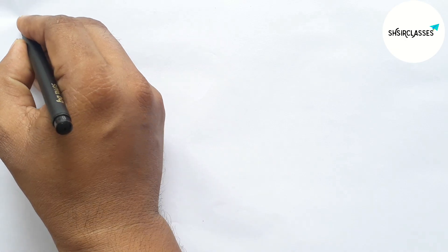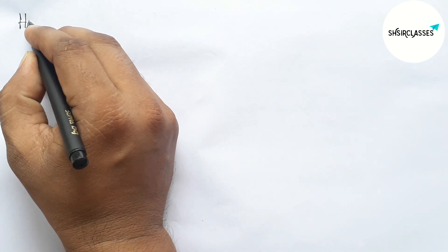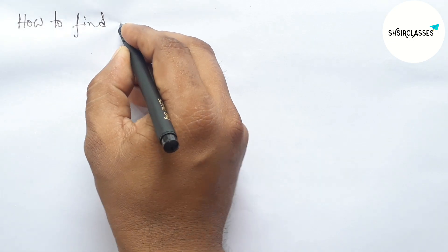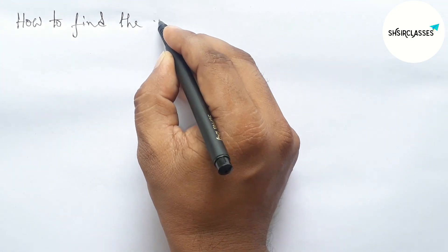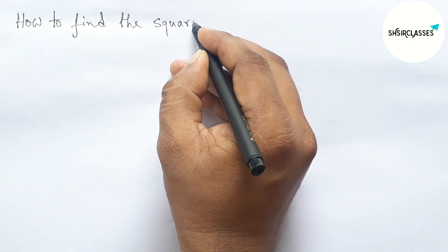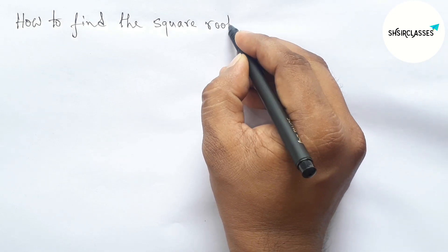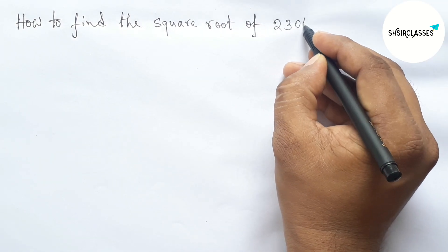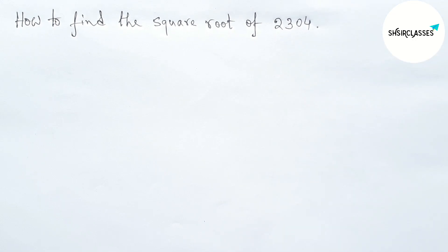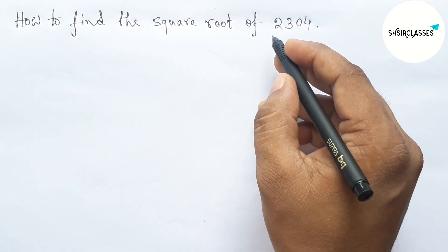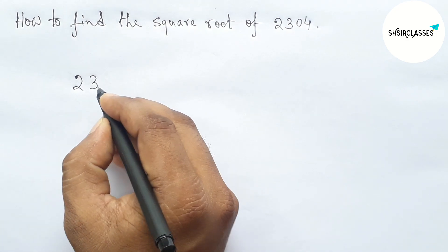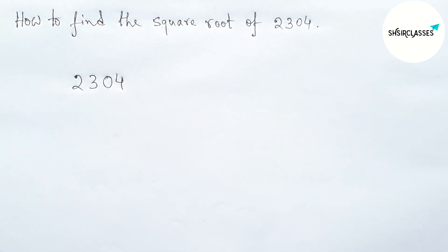Hi everyone, welcome to SI Share Classes. Today in this video, how to find the square root of 2304 by using division method in easy way. So please watch the video till the end. So let's start the video. First of all, let us find the square root of 2304. So first write down here 2304.